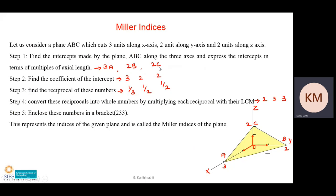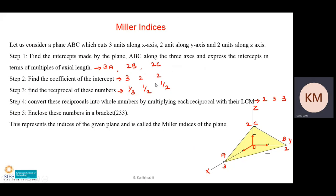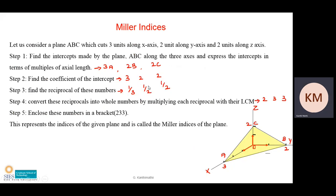Find the coefficients of these intercepts: for 3a the coefficient is 3, for 2b it is 2, and for 2c it is again 2. Now take the reciprocals: 1/3, 1/2, 1/2. Convert these reciprocals into whole numbers by multiplying by the LCM. Here the LCM is 6, so: 6 × 1/3 = 2, 6 × 1/2 = 3, and 6 × 1/2 = 3.